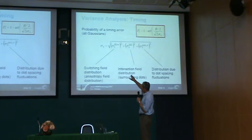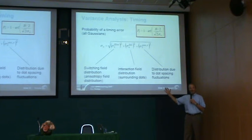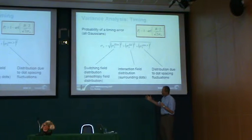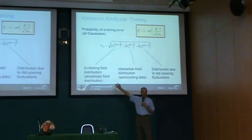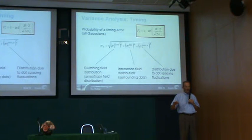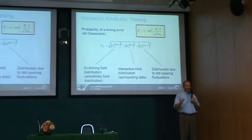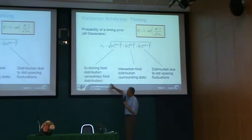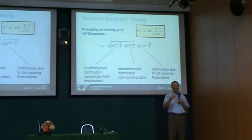What's the sigma? There are three big sources for the timing variance. One is the switching field distribution of the individual little islands. The anisotropy or coercive force of each of those little islands is not identically the same. When we make a magnetic material, there are variations from place to place on the disk, and there's certainly going to be when you make little islands too. So there would be some variance in the anisotropy, giving rise to a switching field distribution — one island will switch at HK1, and the next at HK2.